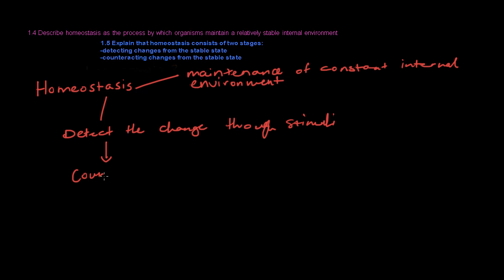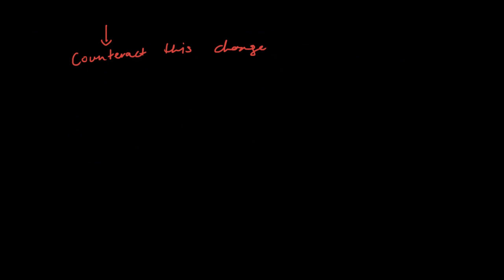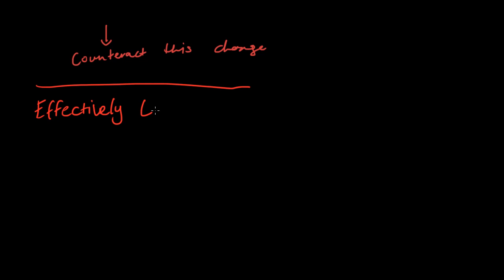The first part of homeostasis involves coordination in a living organism. For example, its nervous or endocrine system in mammals and its hormonal system in plants.